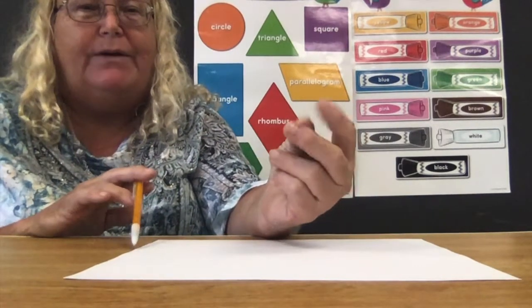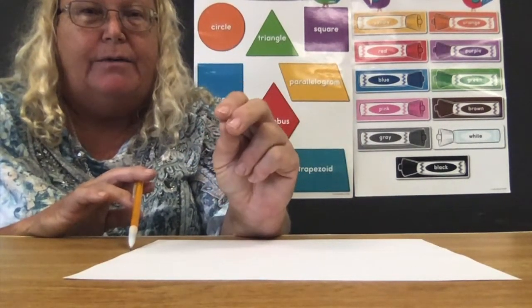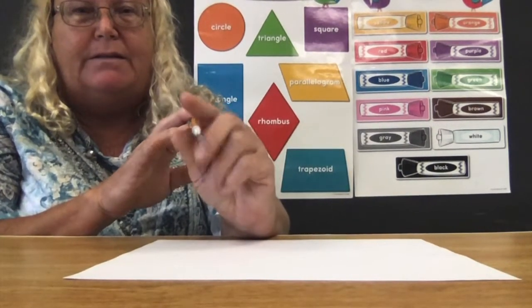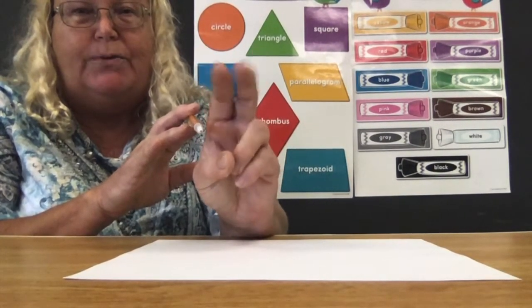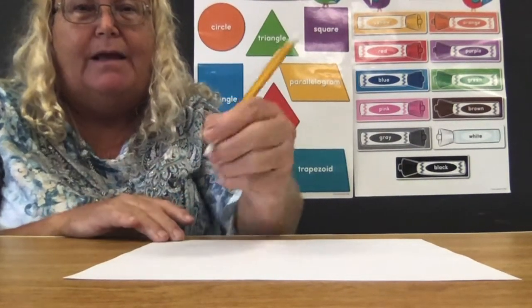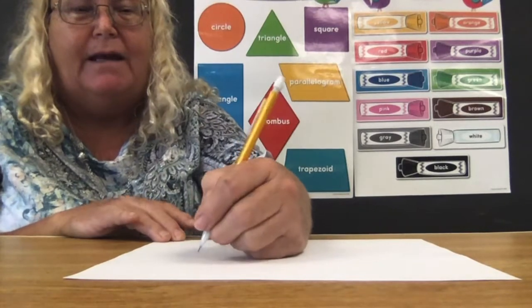Take your three fingers, these three right here, put them together. Now, I put the pencil between these two right here, where you make the peace sign, and my thumb. And I hold it like this and I draw.